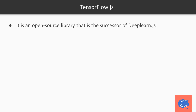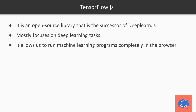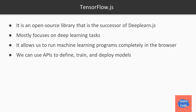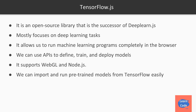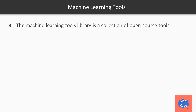TensorFlow.js is an open source library and the successor of DeepLearn.js. Its main focus is on deep learning tasks, and one of its key features is that it allows us to run machine learning programs completely in the browser. We can use APIs to define, train, and deploy models. It supports both WebGL and Node.js, so we can take advantage of Node.js server if computation load in the browser gets too heavy. It also communicates easily with the TensorFlow Python environment, so we can import and run pre-trained models.